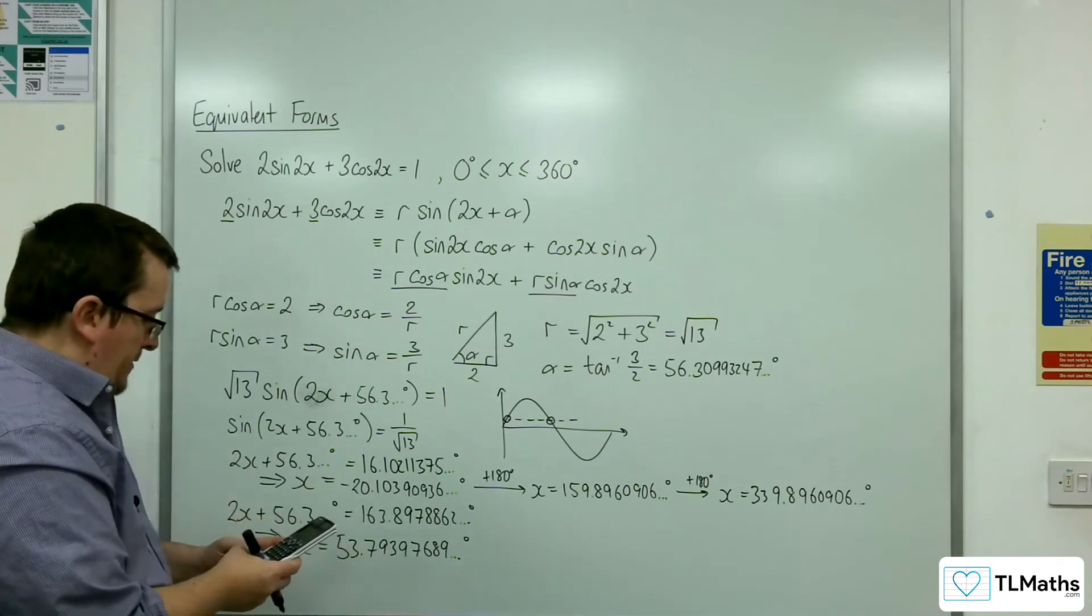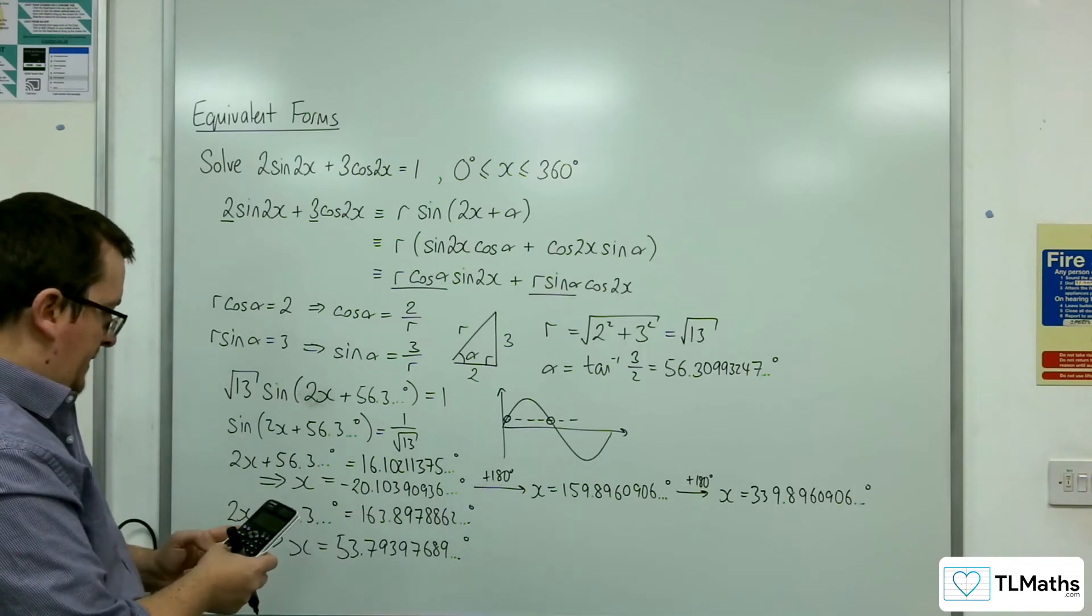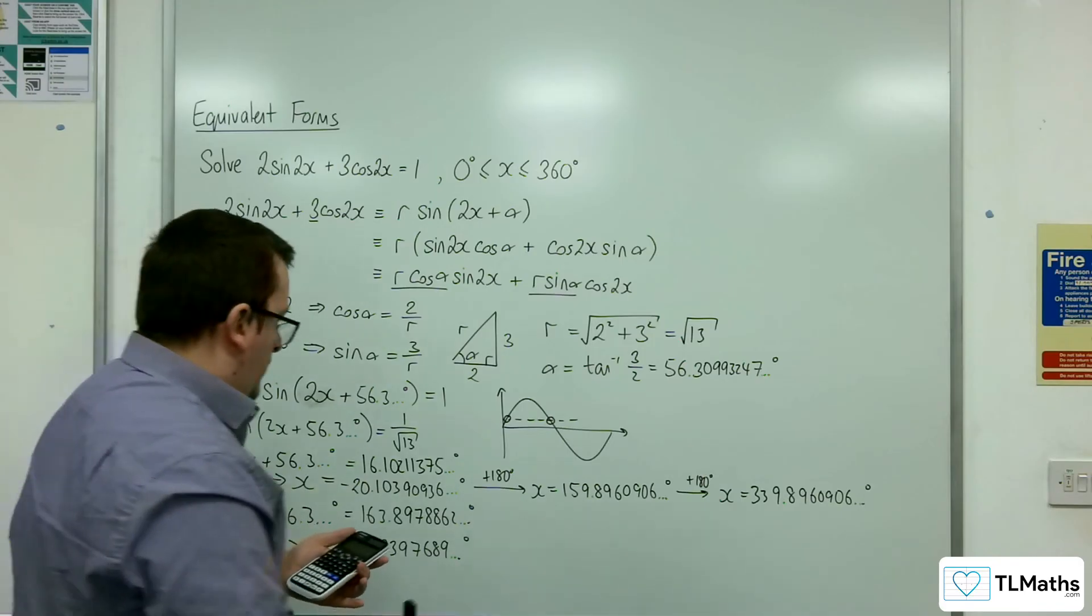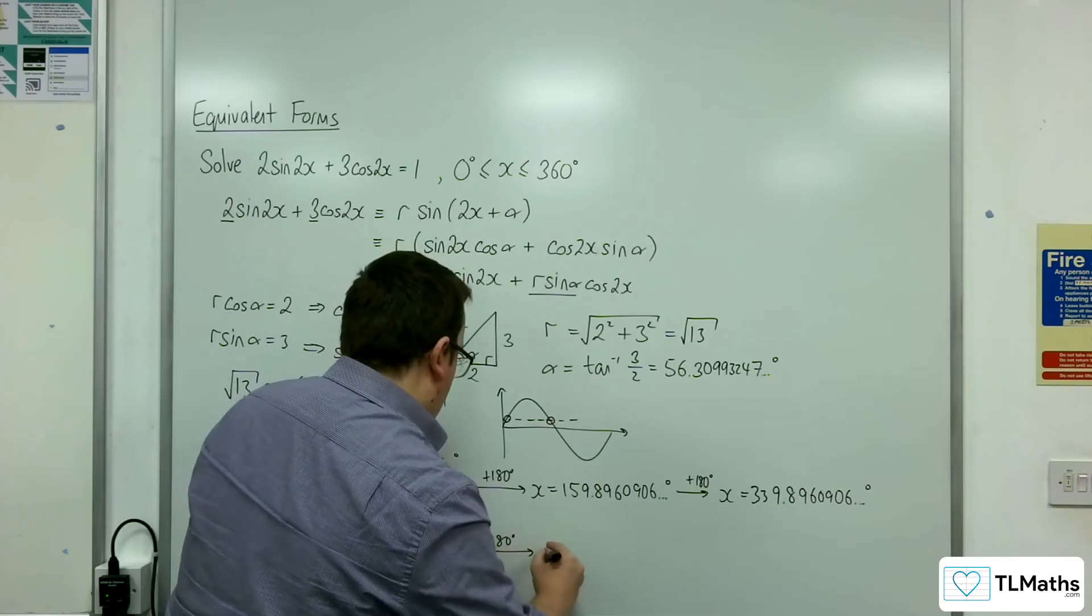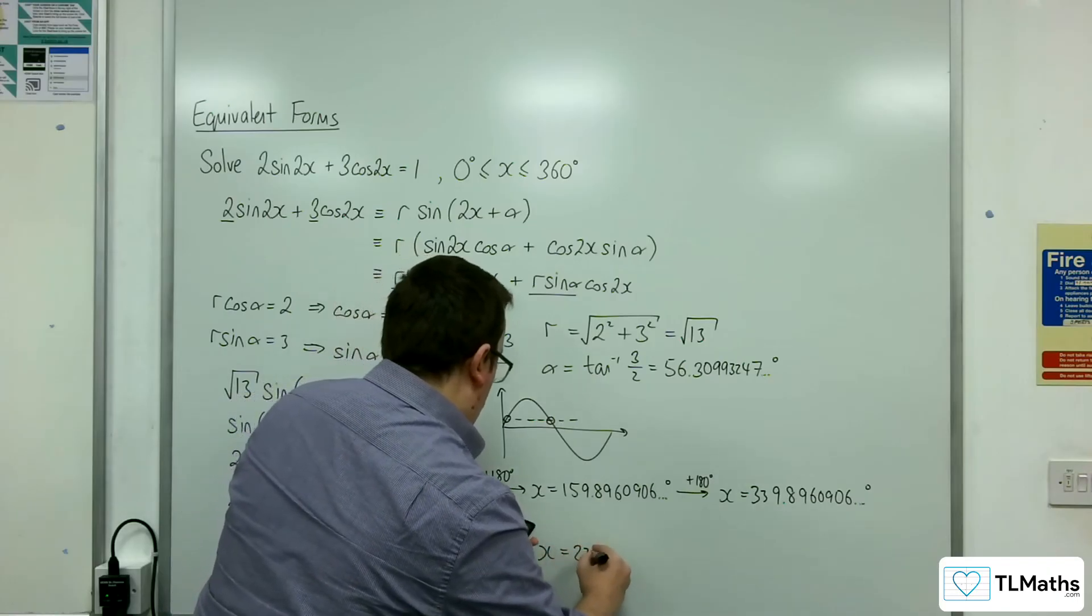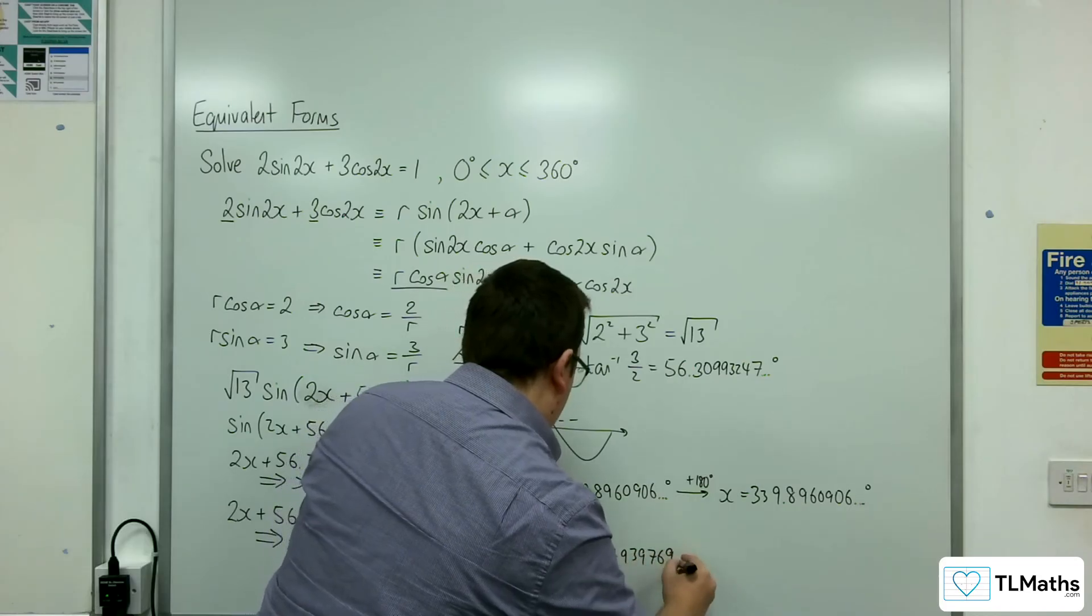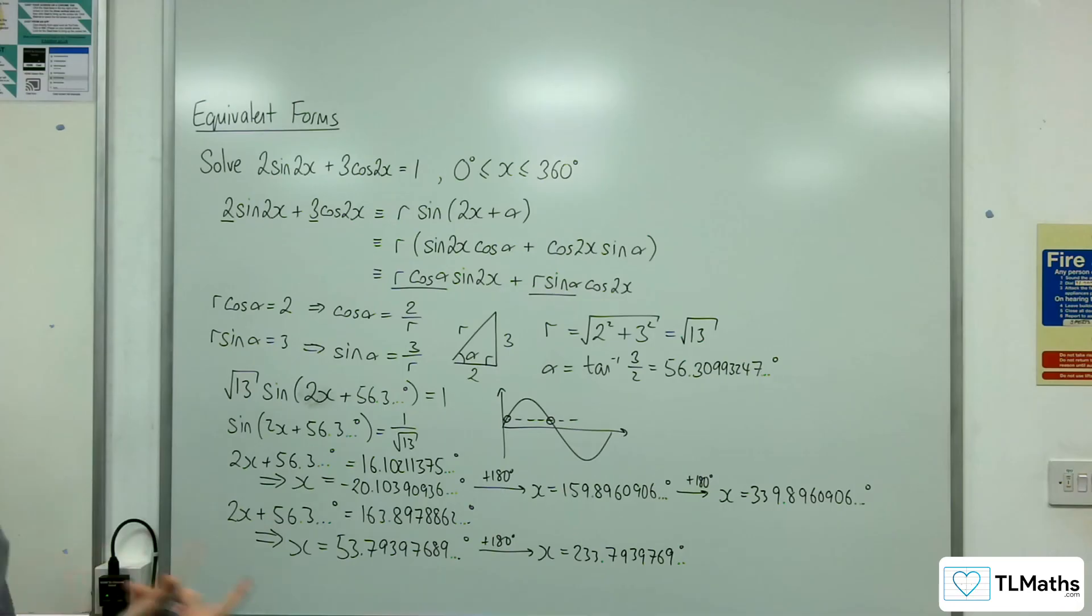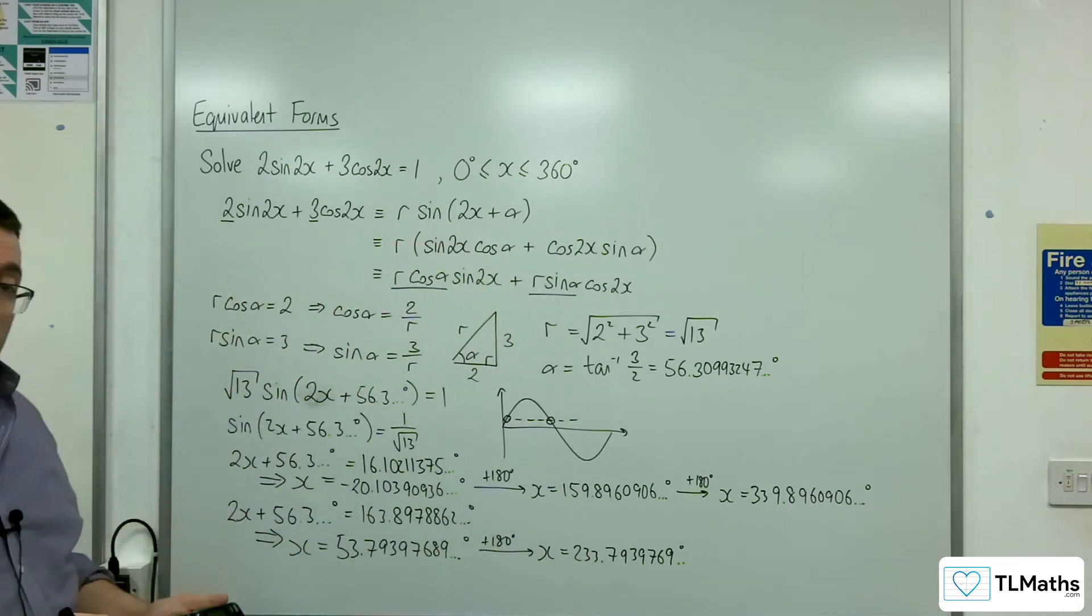Let's get this one: 53.79397689, and I'm going to add on 180. So x is 233.7939769 degrees. If I add 180 onto that, I'm going outside the range, getting 413.